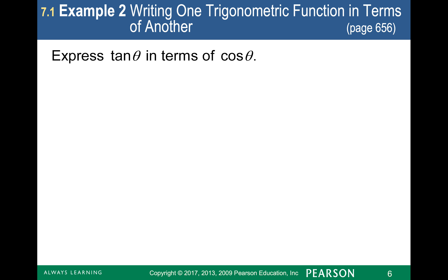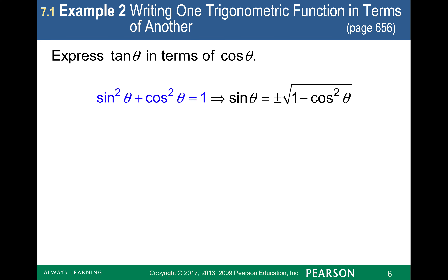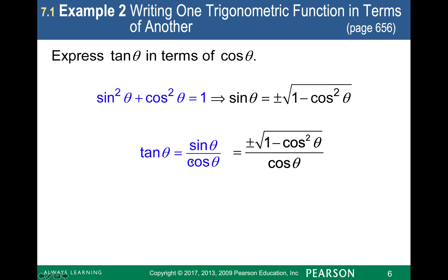If I want to express tangent in terms of cosine, I can take the fundamental identity and translate sine theta into plus or minus the square root of 1 minus cosine squared theta. Since tangent is sine over cosine, I can substitute that expression for sine and divide by cosine, which gives me tangent related to cosine.